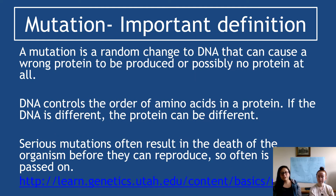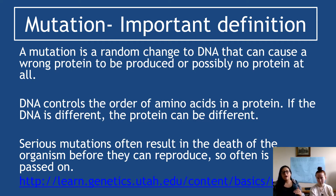An important definition: a mutation is a random change to DNA that can cause a wrong protein to be produced, or possibly no protein at all. We're expanding on that National 5 idea and linking it to gene expression producing a protein. DNA controls the order of amino acids in a protein, so if the DNA is different, the protein can be different. Serious mutations can often result in the death of the organism before it can reproduce, causing such severe health effects that they struggle to reach puberty, or they are born infertile.